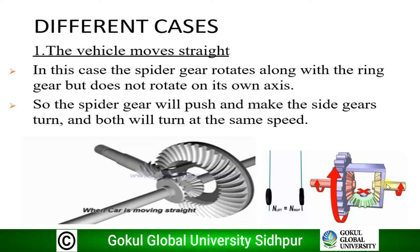The carrier provides torque to both side gears — the red and yellow ones — which in turn drive the left and right wheels. The ring gear rotates and spins both left and right side gears. N-left equals N-right, meaning RPM on the left side equals RPM on the right side. If resistance at both wheels is equal, the spider gear does not spin on its own axis — it only rotates along with the ring gear. The spider gear pushes and makes both side gears turn at the same speed. When the vehicle moves straight, the spider and side gear assembly moves as a single solid unit.